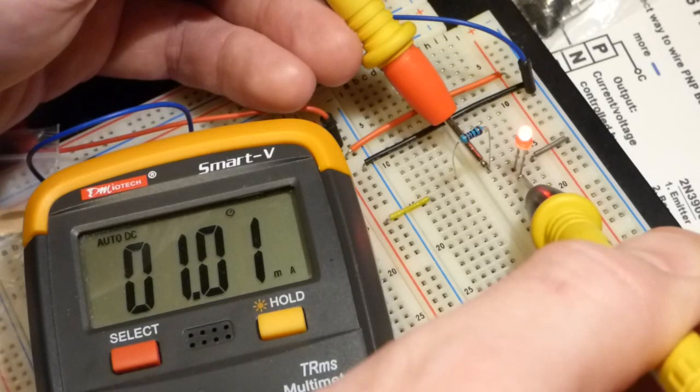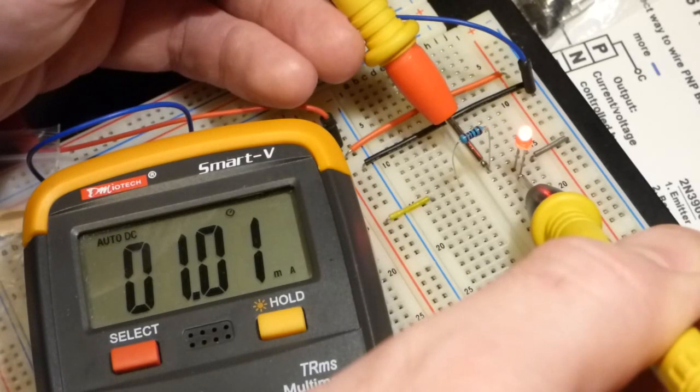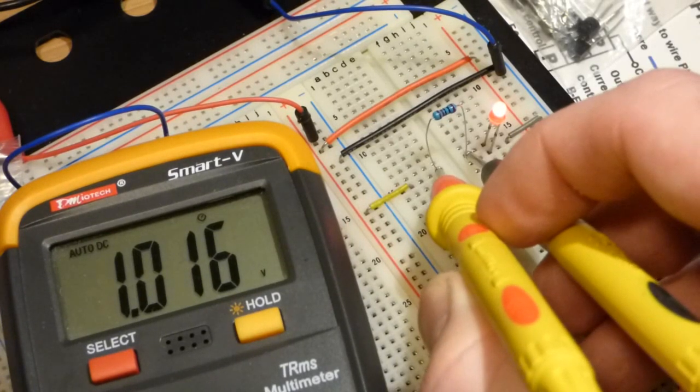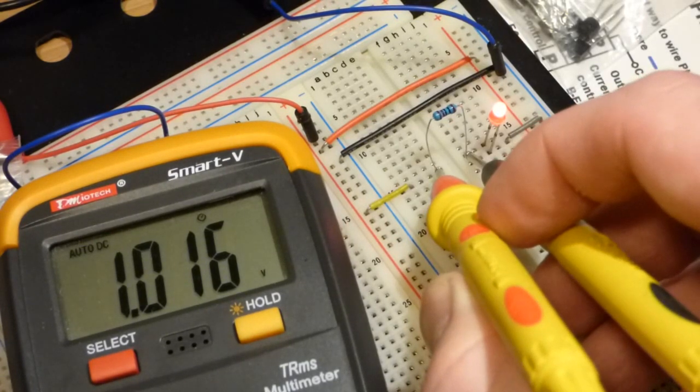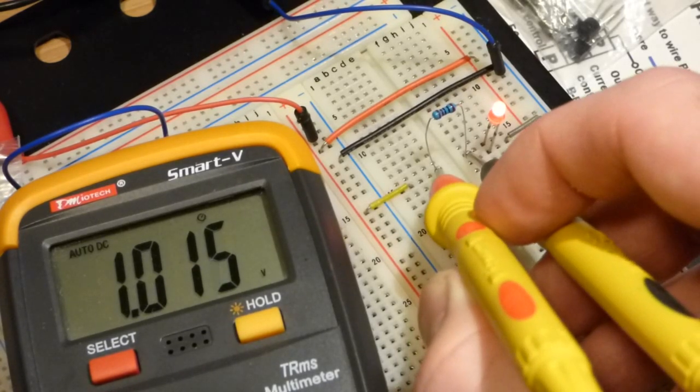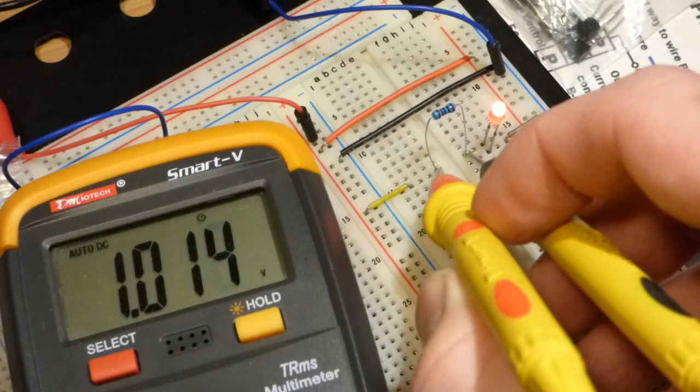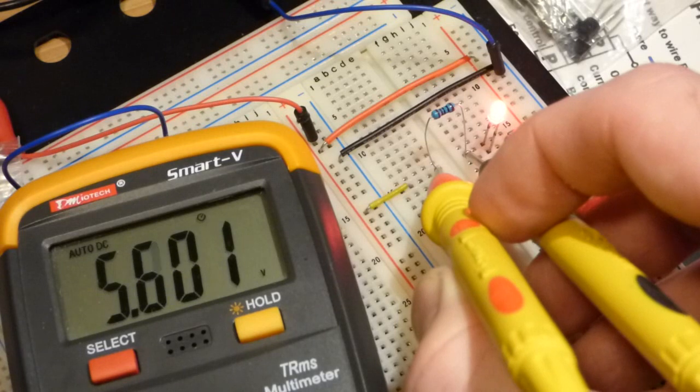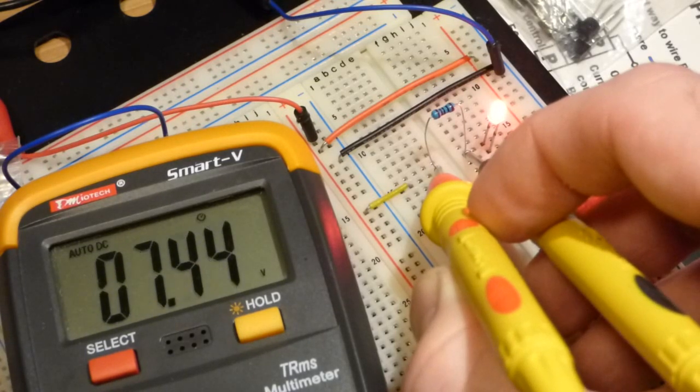Because remember, series components have the same amount of current going through them. So that's the current going through the resistor, that's the current going through the meter, and that's the current going through the LED. It is equal because they are in series. Now that voltage and resistance relationship when it comes to current is linear, which means that we don't have to just do one volt to get one milliamp of current through a 1000 ohm resistor.